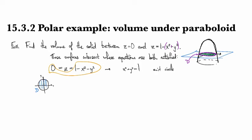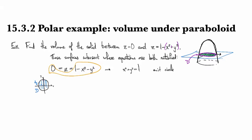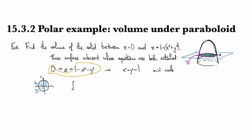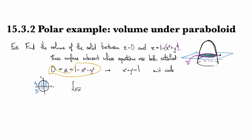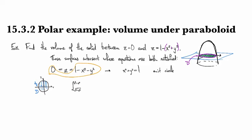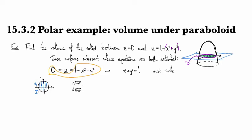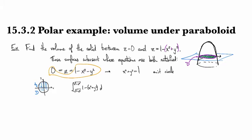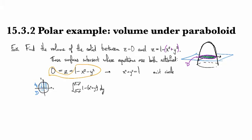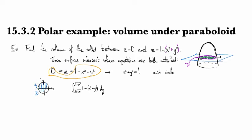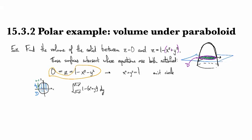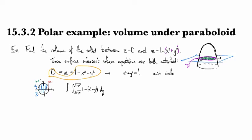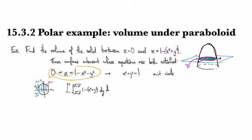So if we do the dy integration first, like this, so we do dy first, then we're going to be looking at the integral from minus square root one minus x squared up to positive the square root of one minus x squared, and then we have this function in the y direction, and then we have dy, and then when we do dx, we see that the first slice is here at x equals minus one, and then the last slice is here at x equals one, so we're going to be integrating from minus one to one in the dx direction.